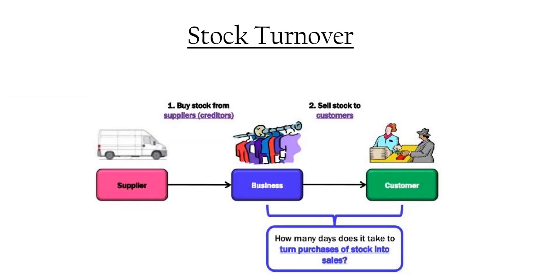Stock turnover is completely dependent on the industry, so it would be unfair to compare across industries. A supermarket will have a very fast stock turnover due to the wide variety of low-priced household goods sold. You couldn't compare that to a luxury car dealership, where stock turnover is much lower due to the high price of the product and how much they can afford to stock. Compare within the same industry and across years.